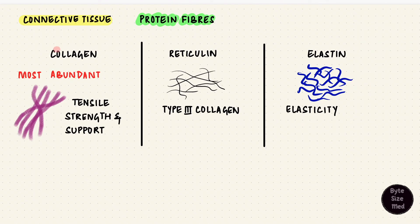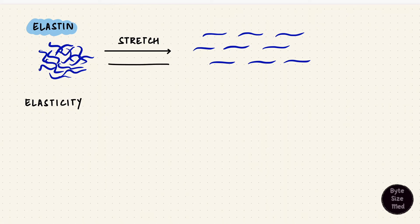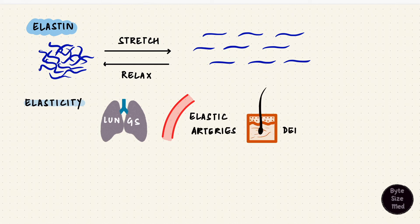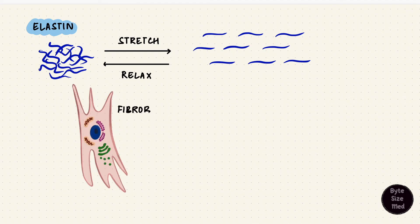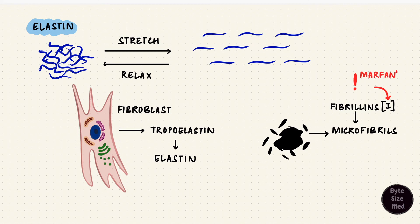Now we've covered collagen and reticulin. For elastin, we'll compare it to collagen. Functionally, it's more for elasticity — stretch and return to its original shape. This would be important in the lungs, elastic arteries, elastic ligaments, and the dermis of skin; that's why pinched skin returns to its original state. Elastin is also synthesized in fibroblasts. The precursor is tropoelastin, which forms elastin. Elastin deposits on microfibrils that form a scaffold, and these microfibrils are made up of fibrillin — mostly type 1. A gene defect for fibrillin type 1 can result in Marfan syndrome.